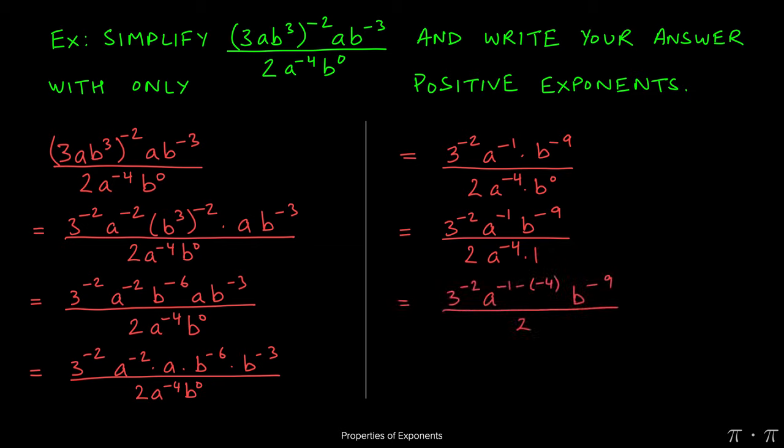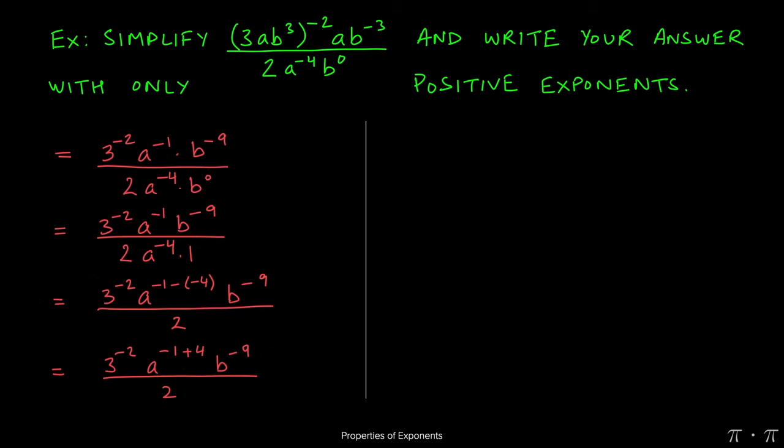Next, we can use the quotient rule on the a's because everything else is exactly as simplified as it can be. a to the negative 1 divided by a to the negative 4 will result in the quotient rule being applied, so you have a raised to the top power minus the bottom power. Negative times a negative will give us a positive, so this turns into a to the negative 1 plus 4, which, if we were to move to the next page, will give us a to the positive 3. Everything else stays the same.